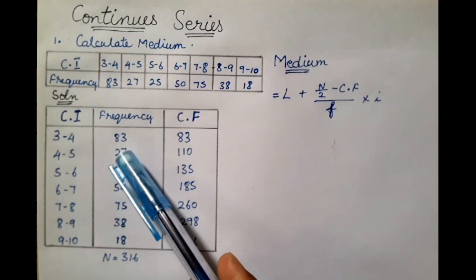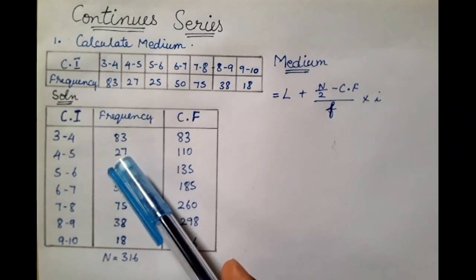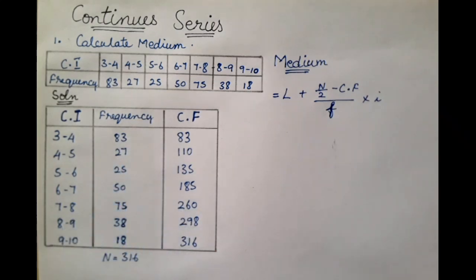What frequency is it? It is 83 or 27 frequency. And last I, I is the length of the class interval. Length of the class interval is 3 to 4 class intervals, the difference between 3 and 4. It is 1. It is 4 to 5 difference. Then length of the class interval is 1.